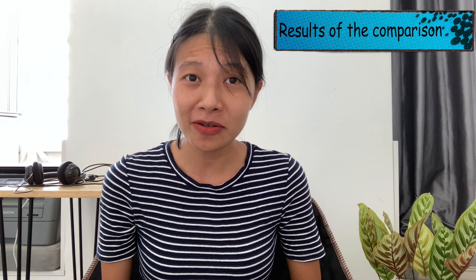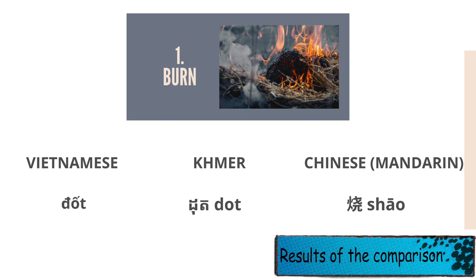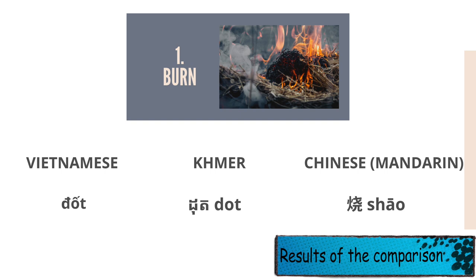Now, let's have a look. First, apologies, because I don't speak Khmer — I just quickly learned how to pronounce these words from Google Translate, but you will see what I mean. One: burn. In Vietnamese, 'đốt'; in Khmer, 'đọt' — almost identical. In Chinese Mandarin, 'shāo.'